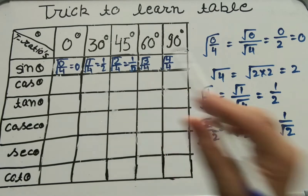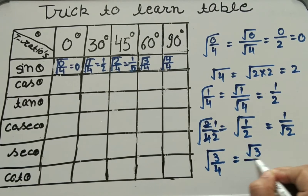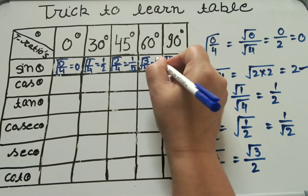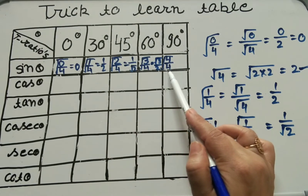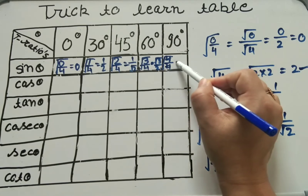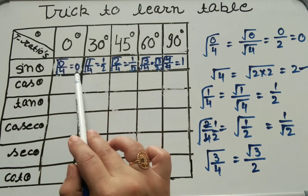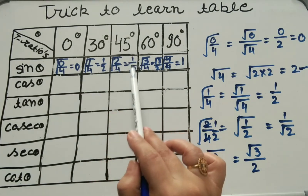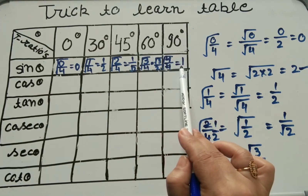Next, under root 3 by 4. We write under root 3 upon under root 4, where under root 4 equals 2, so value is under root 3 by 2. Then under root 4 by 4 — 4 cancels with 4, answer is 1. So sin theta values are: 0° = 0, 30° = 1/2, 45° = 1/√2, 60° = √3/2, 90° = 1.